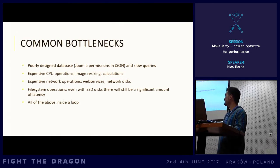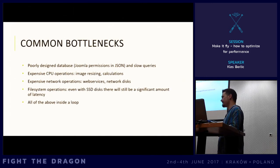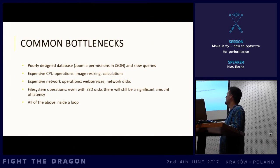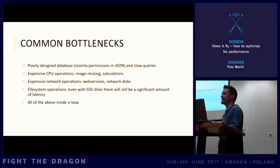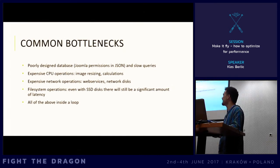The second bottleneck is expensive CPU operations — imagine image resizing or some complex price calculation that can also involve remote web services. A third thing is extensive network operations such as web services or network disks. File system operations, even with SSD disks, are still expensive — when you have like 100,000 hits to do, it's going to take a long time. And of course, everything in the above inside a loop: when you do multiple iterations of the same thing, it can go on and never finish.